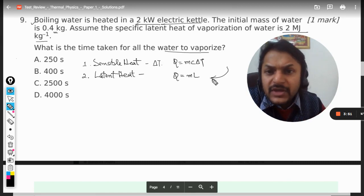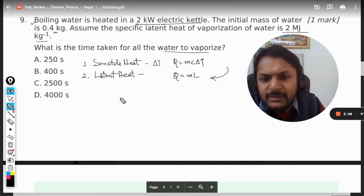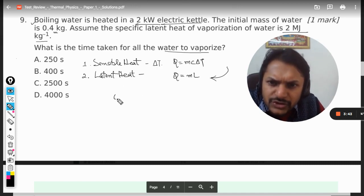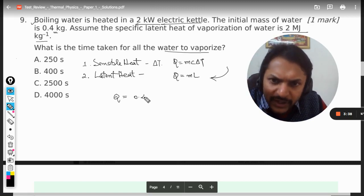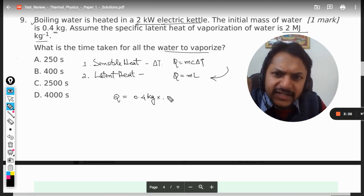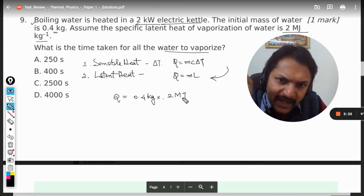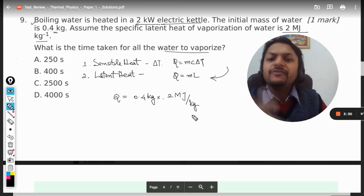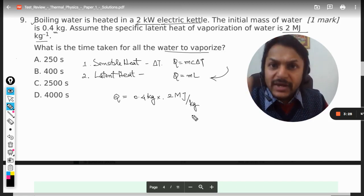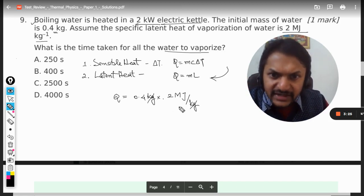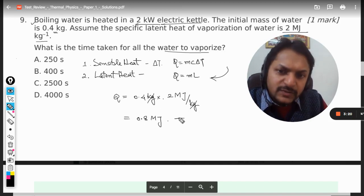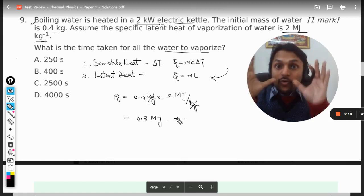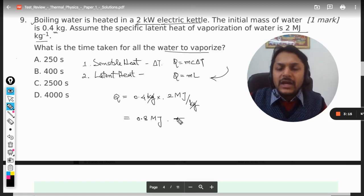So what will be the heat that is required? In this question, first of all we will find what is the heat that is required. So mass is 0.4 kg, multiply by the latent heat that is 2 megajoule divided by kg. I have written the units also just to make sure that everything falls in place. Kg and kgs are getting cancelled out, so we would be having 0.8 megajoule. So this much is the energy that is required to evaporate all of the water.